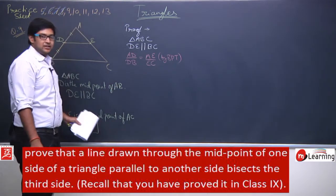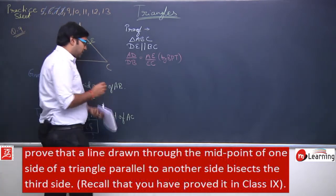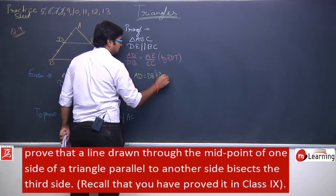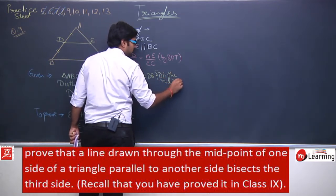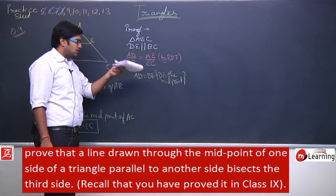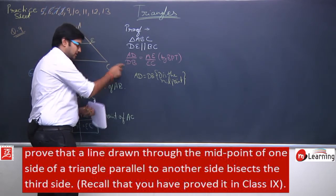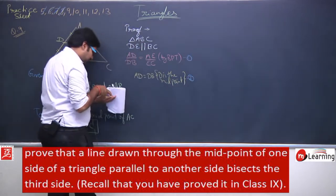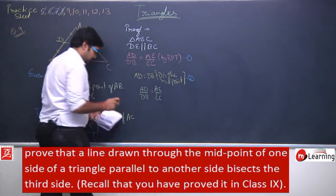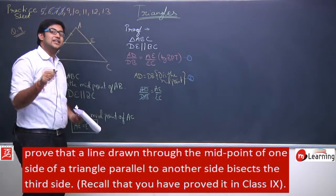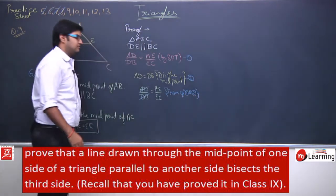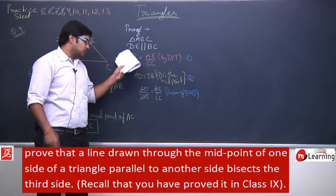It is also given that D is the midpoint of AB. Since D is the midpoint, AD = DB. This is equation 2. From equation 1 and equation 2, we can substitute: since AD = DB, the ratio AD/DB = 1. So 1 = AE/EC, which gives EC = AE.